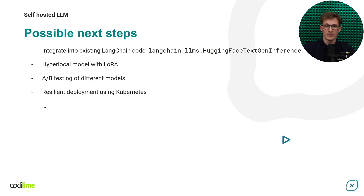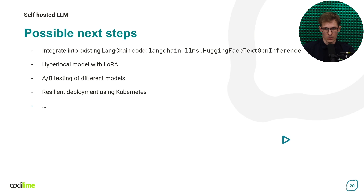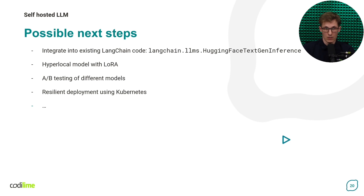Let's say you already have some LangChain code that uses a proprietary LLM, but you do not want to send your private data to an external party. Luckily, LangChain already supports TGI-compatible models. You instantiate the HuggingFaceTextGenInterface class, point it to your local web server, and the rest of the chain simply uses the new model. It's as simple as that.